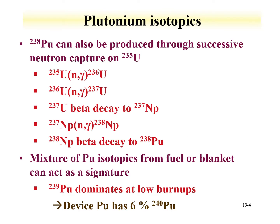Plutonium-238 can also be produced through successive neutron captures on uranium-235. Uranium-235 captures a neutron to form uranium-236, which captures again to form uranium-237, which beta decays to neptunium-237. Neptunium-237 captures a neutron to form neptunium-238, which then beta decays to plutonium-238. This neptunium-to-plutonium-238 route is also used for the production of plutonium-238 for thermoelectric applications.